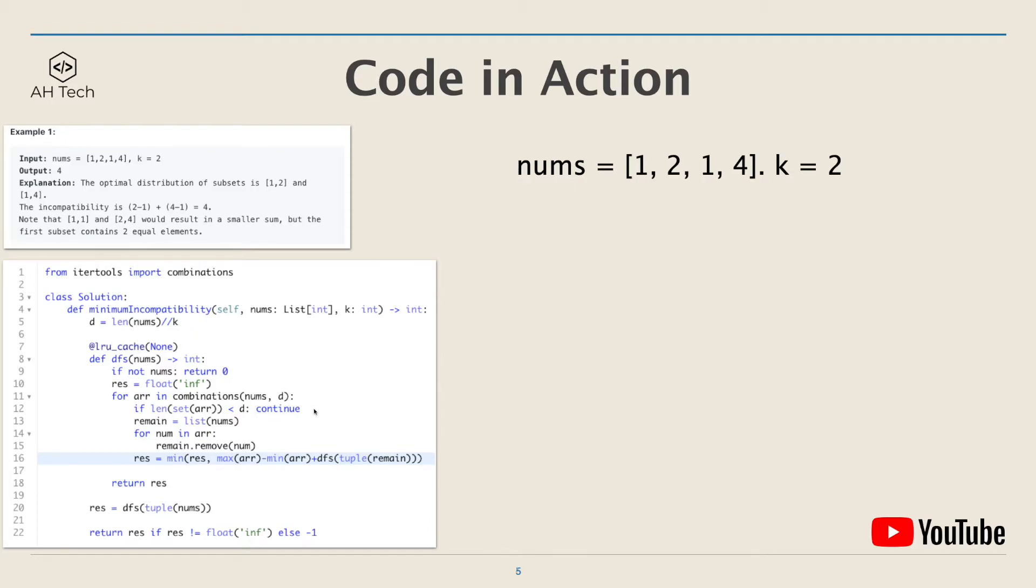First step is to generate all possible subsets of size 2. You can notice that there is one subset that has duplicate elements, and this subset array will be skipped with this condition.